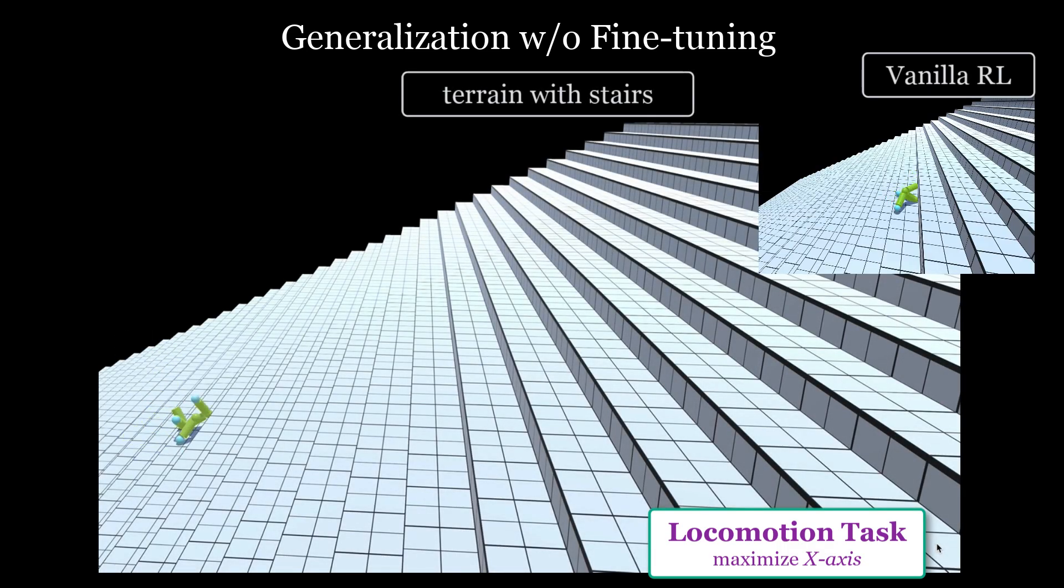The reason for this generalization ability is that our agents are modular, so a small agent trying to climb a bump is similar to a big agent trying to climb these stairs.